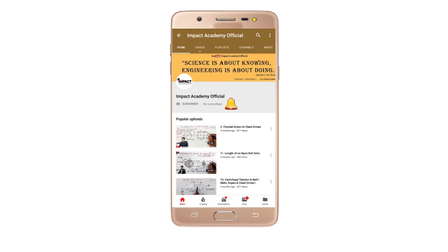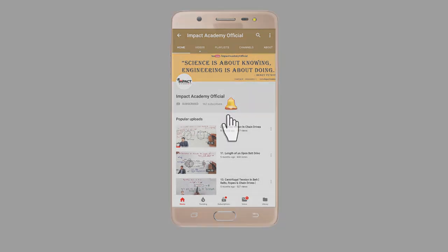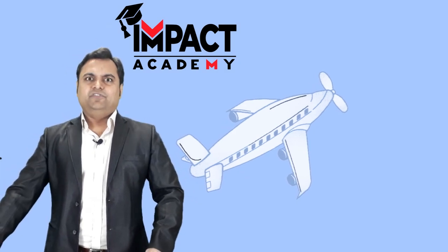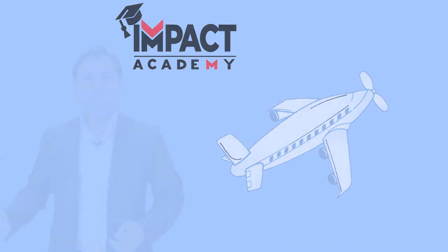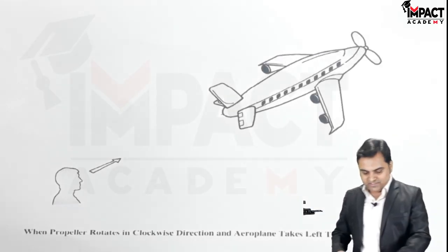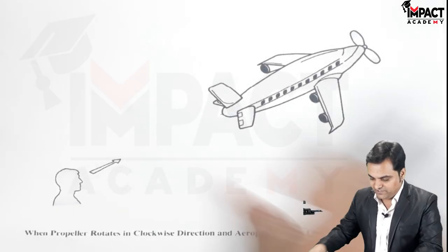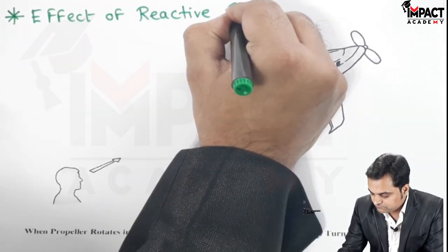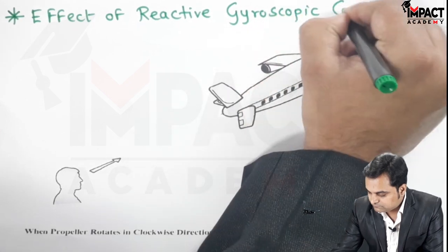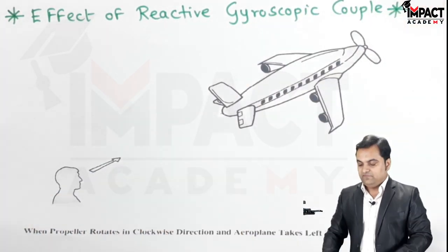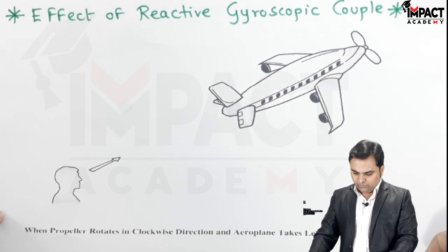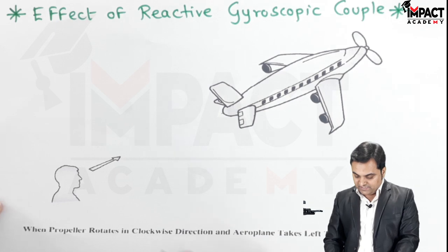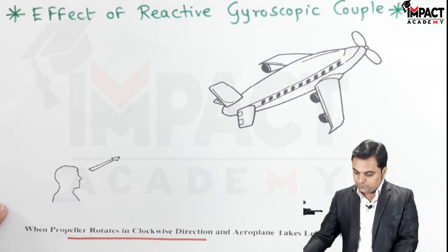Hi friends, here in this video we are going to see the effect of reactive gyroscopic couple on an airplane for the given conditions. Here is the case in front of us where we have to find the effect of reactive gyroscopic couple. The condition mentioned is when the propeller rotates in clockwise direction.